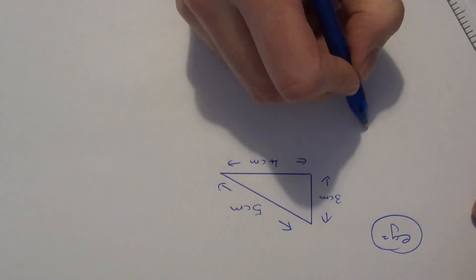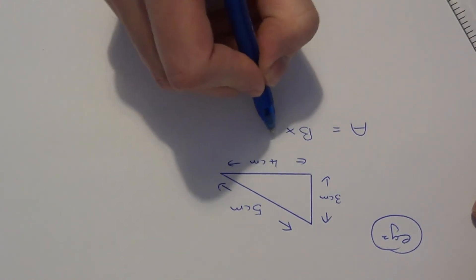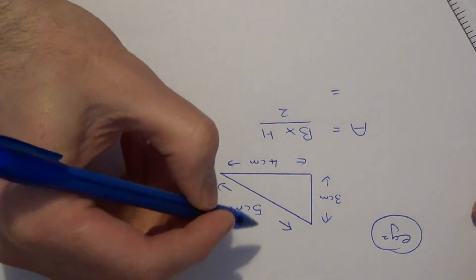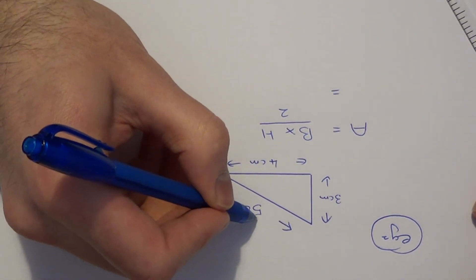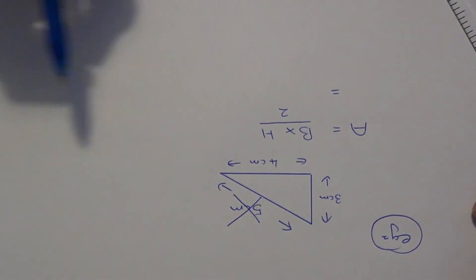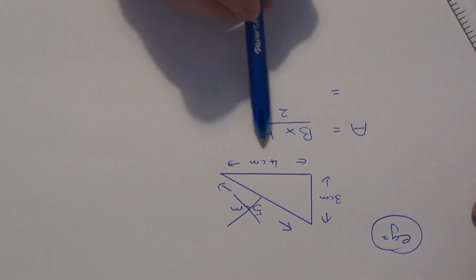Again, all we need to do is use the formula: area equals base times height divided by 2. We don't need the 5 centimeters since that's the sloping height, so we can cross it out. We just substitute the base and perpendicular height into our formula.